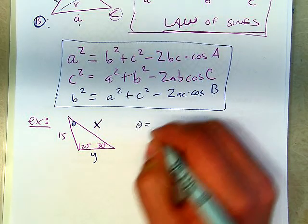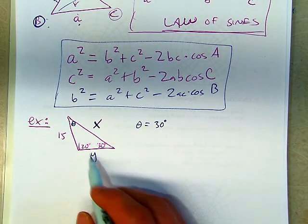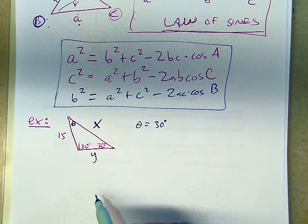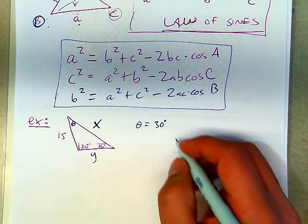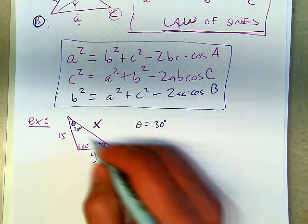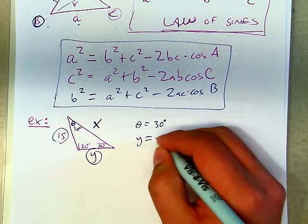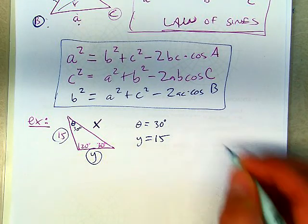Well, the obvious place to start is theta, which has to be 30 degrees because this has to add up to 180, which then means that this is an isosceles triangle because you've got 30 degrees here. 30 and 30 means that these are the two bases. 15 and y are the two bases. Those have to be the same. I'm sorry, the two legs. Those have to be the same, so y is 15.